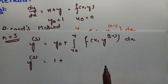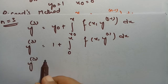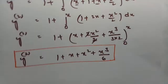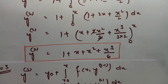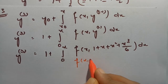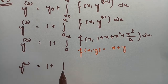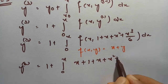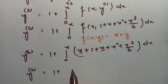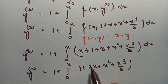y₀ = 1, x₀ = 0, and the second approximation is 1 + x + x² + x³/6. Since f(x, y) = x + y, we add x to the second approximation: 1 + integral from 0 to x of (x + 1 + x + x² + x³/6) dx = 1 + integral from 0 to x of (1 + 2x + x² + x³/6) dx.